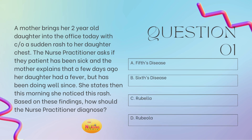Question number one: A mother brings her two-year-old daughter into the office today with complaints of a sudden rash to her daughter's chest. The nurse practitioner asks if the patient has been sick and the mother explains that a few days ago her daughter had a fever but has been doing well since. She states that this morning she noticed this rash. Based on these findings, how should the nurse practitioner diagnose? Is it A, 5th disease? B, 6th disease? C, rubella? Or D, rubeola?